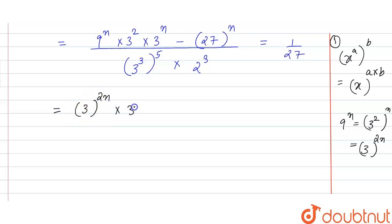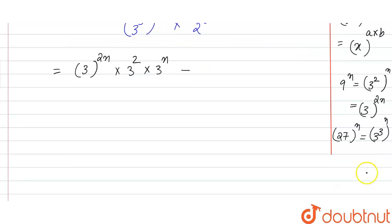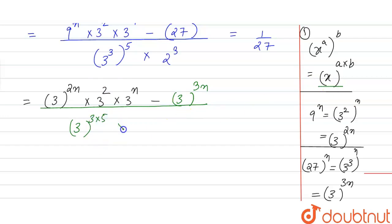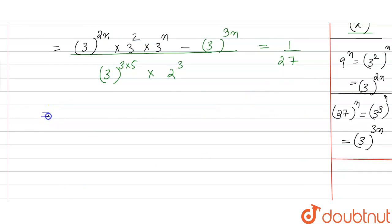So the numerator becomes 3 raised to power 2n, into 3 raised to power 2, into 3 raised to power n, minus 27 raised to power n, which is written as 3 raised to power 3n. In the denominator, 3 raised to power 3 whole power 5 is written using the property as 3 raised to power 15, into 2 raised to power 3.